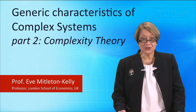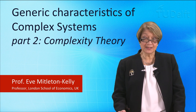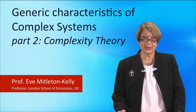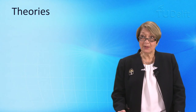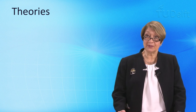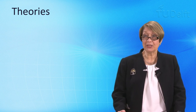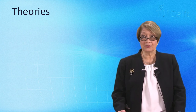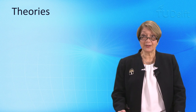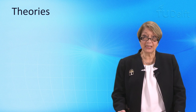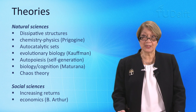Hello again. In part two we're going to look at the characteristics of complex systems that we have come to understand through the theories of complexity. Let me remind you what we looked at in the first video: the group at the top, connectivity, interdependence, feedback, and emergence. We will build on those to look at the others, but let me first introduce you to some of the theories of complexity that have come from the natural sciences, because they have all contributed to our deep understanding of complex systems.